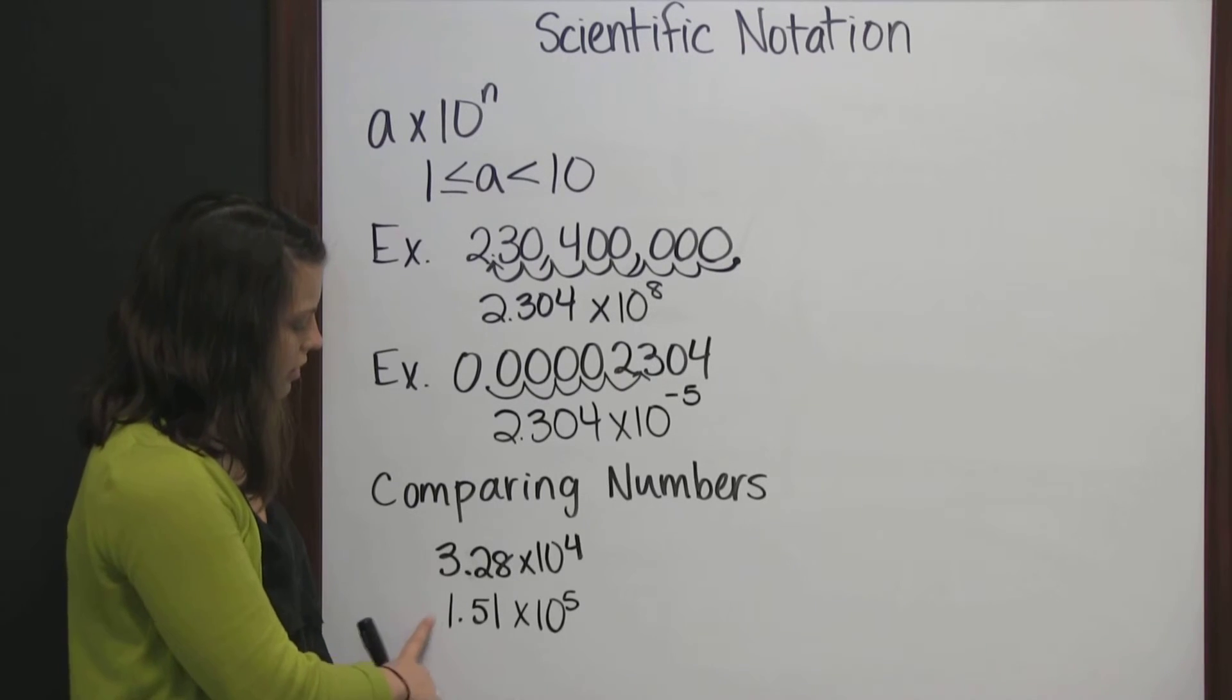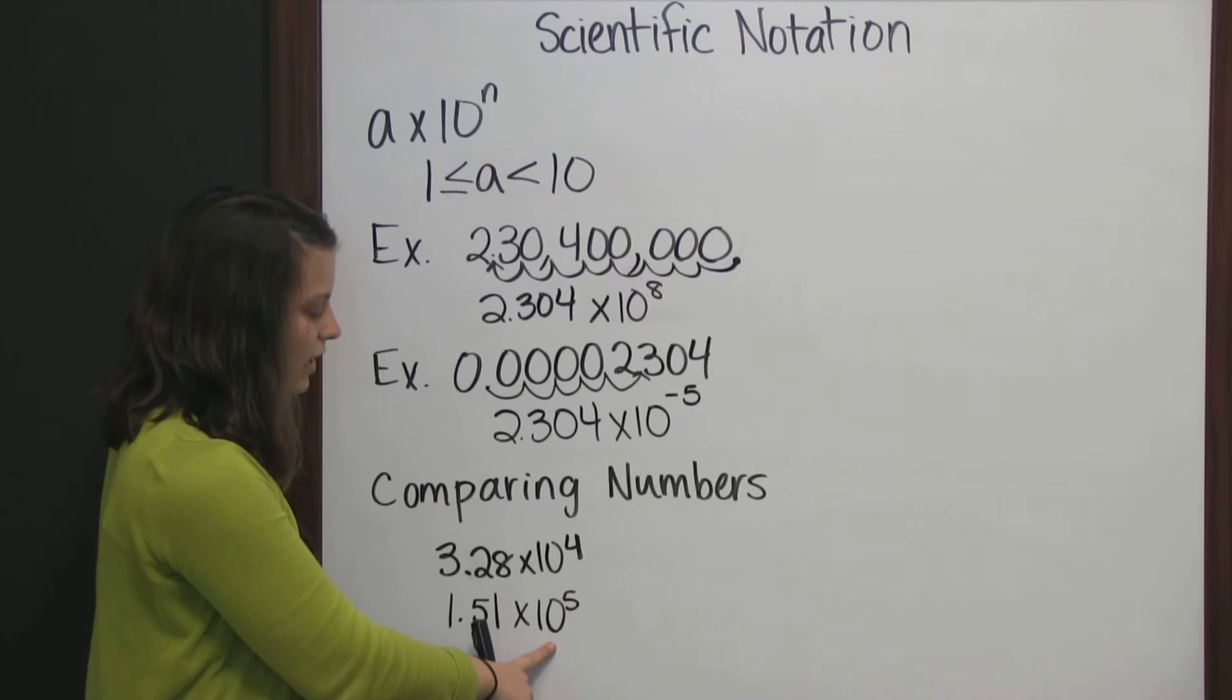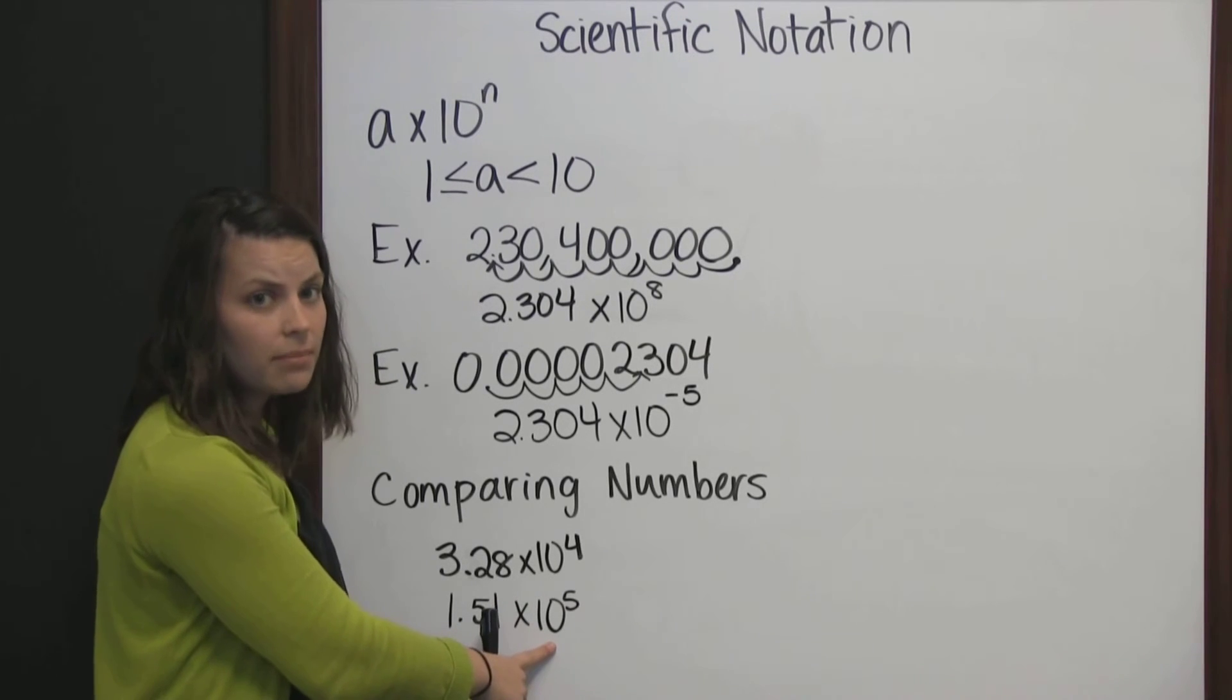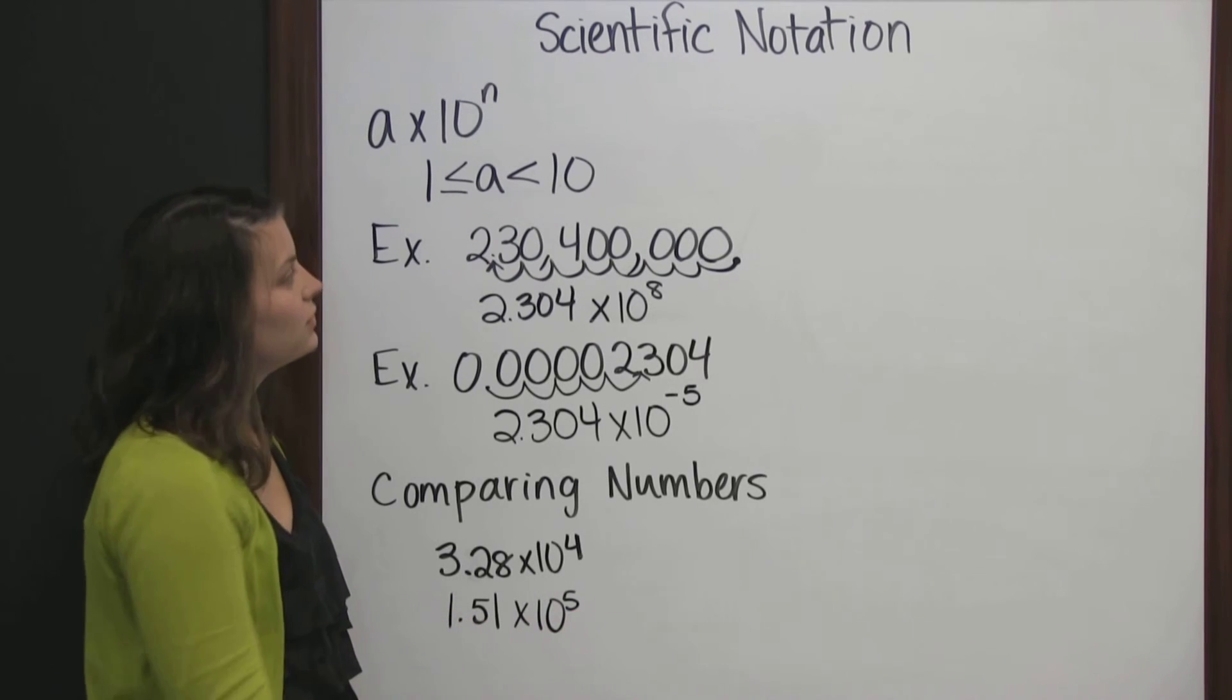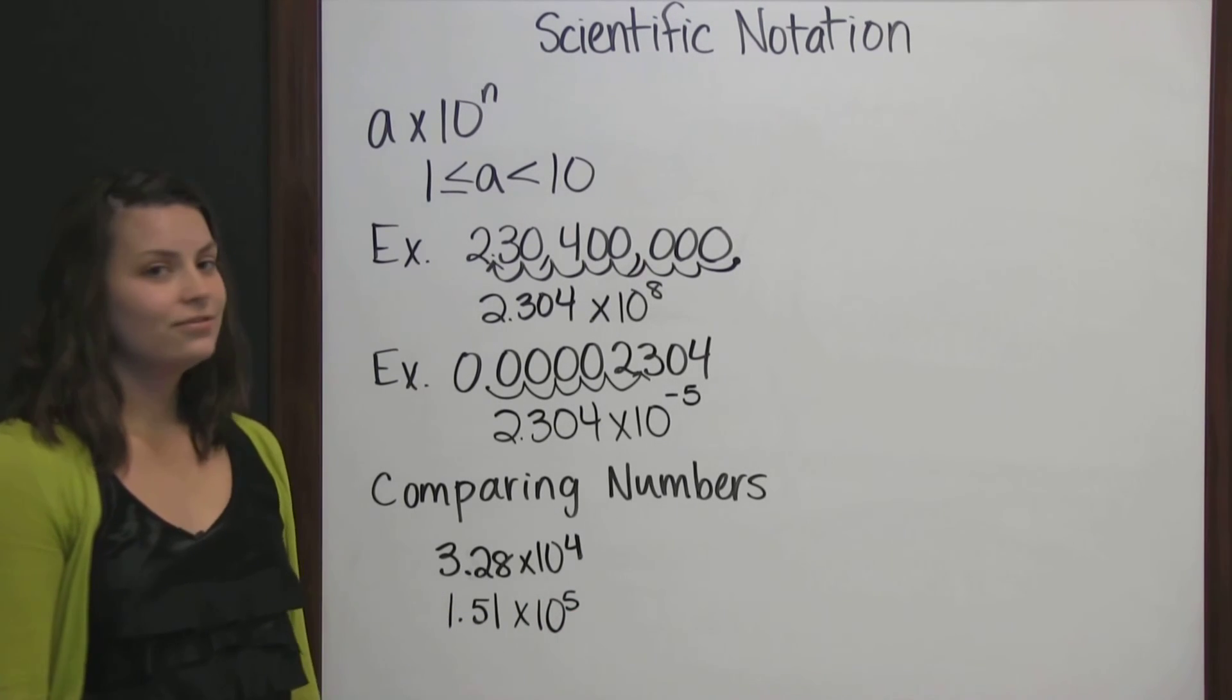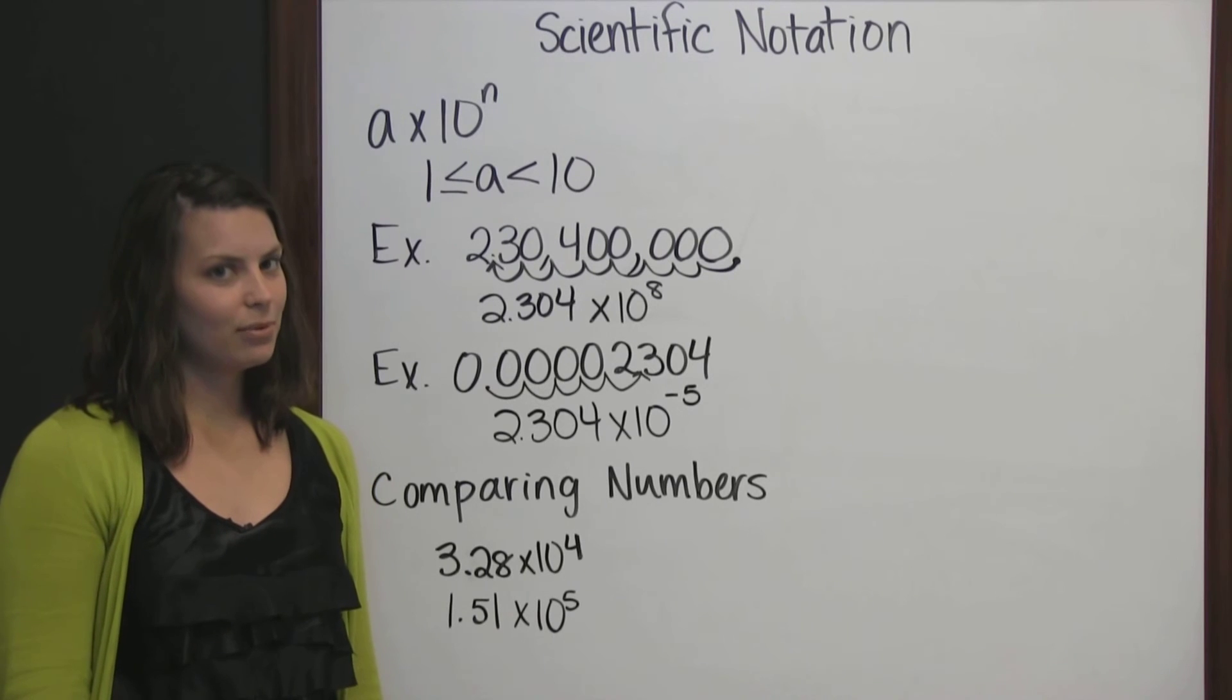Looking at these two numbers in scientific notation, I can tell that 1.51 times 10 to the 5th is the larger number because it has the larger exponent. So it's a great method for very large and very small numbers.